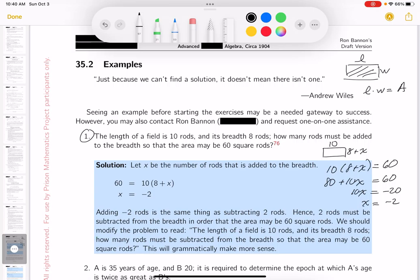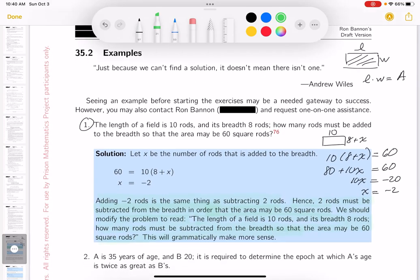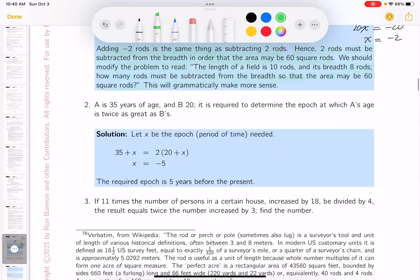Certainly, if things are a little different, they want people to interpret the answer. And this doesn't make sense to me. I'll tell you why it doesn't make sense to me. They're not adding to the breadth of this thing. They're taking from it. So the problem really should be rewritten, and it should speak to what they're really doing. So let me kind of read that off to you. You know, the way I would do it, we're adding minus 2 rods, the same thing as subtracting 2 rods. Hence, 2 rods must be subtracted from the breadth in order for the area to be 60 square rods. We should modify the problem to read: the length of the field is 10 rods, the breadth is 8 rods. How many rods must be subtracted from the breadth so the area may be 60 square rods? This will grammatically make more sense to a reader.